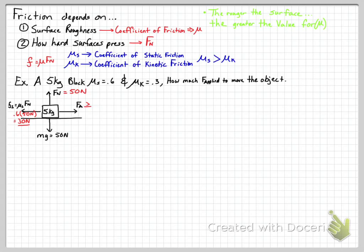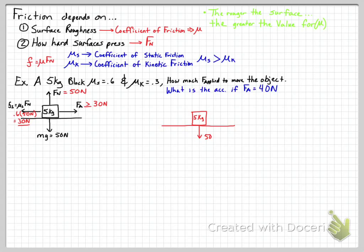We have 30 newtons of static friction. How much force do we need to apply to move the object? It must be greater than or equal to 30 newtons. If it equals 30, net force is zero and acceleration is zero — the object could be at rest or moving at constant velocity. The minimum force needed is 30 newtons; anything above that overcomes static friction and the object begins to move. If I apply 40 newtons, that's greater than the 30-newton maximum static friction, so the object moves. Once moving, static friction no longer applies — static friction is only for stationary objects.